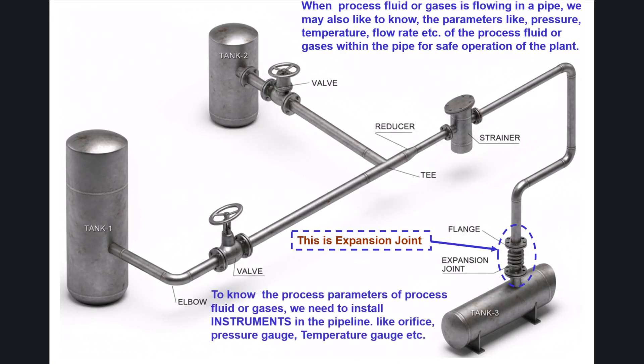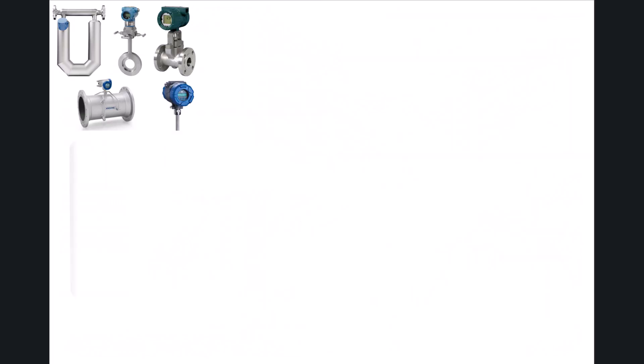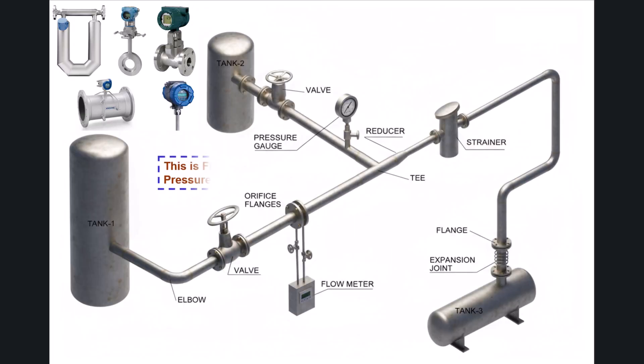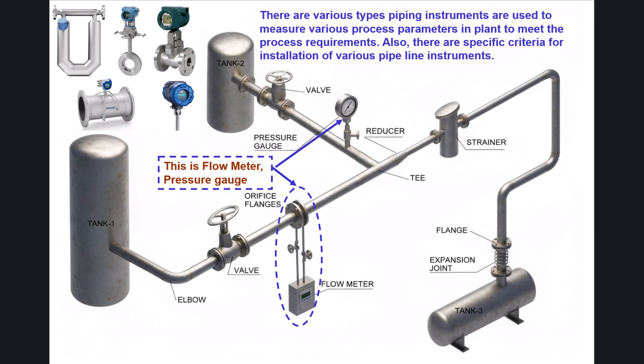To monitor the process parameters of fluid or gases, we need to install instruments in the pipeline — such as orifice, pressure gauge, temperature gauge, and flow meter. There are various types of piping instruments used to measure various process parameters in a plant. There are also specific criteria for the installation of various pipeline instruments.